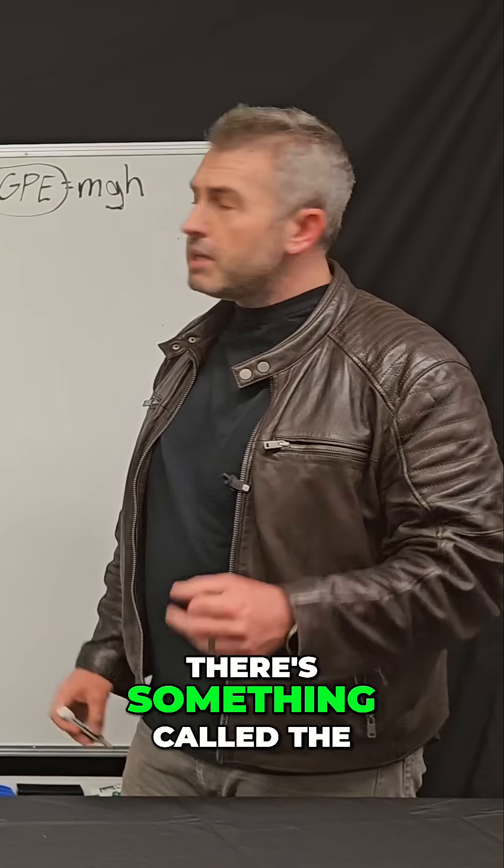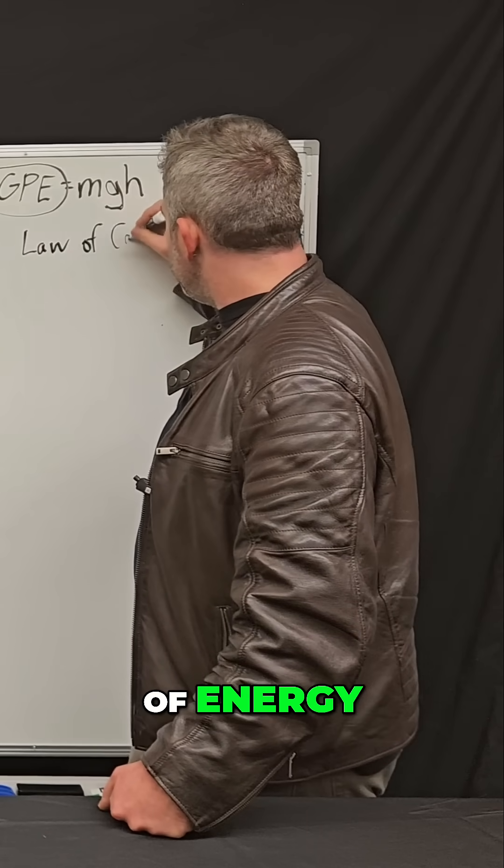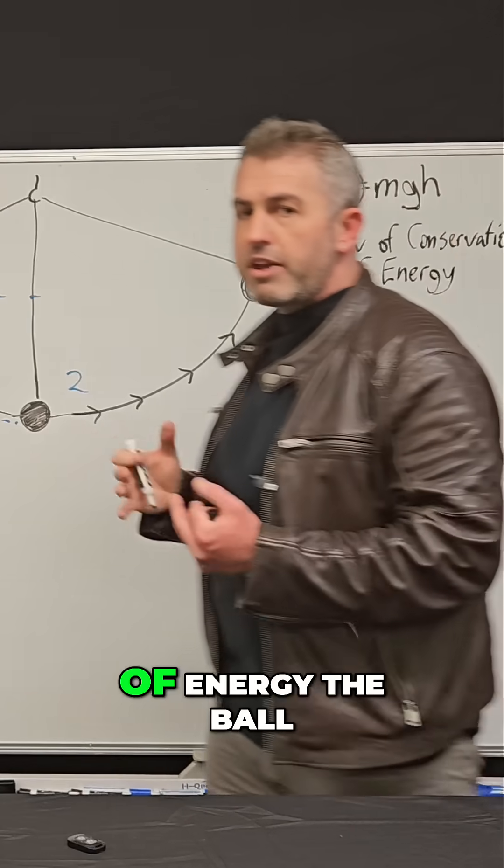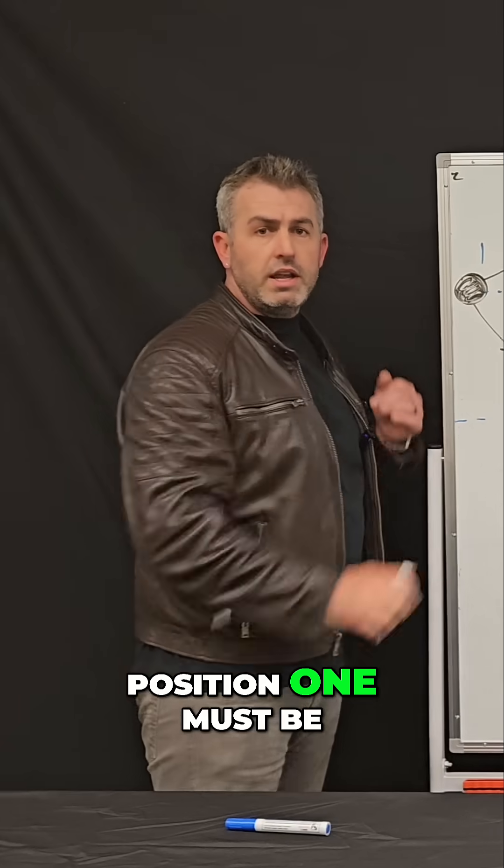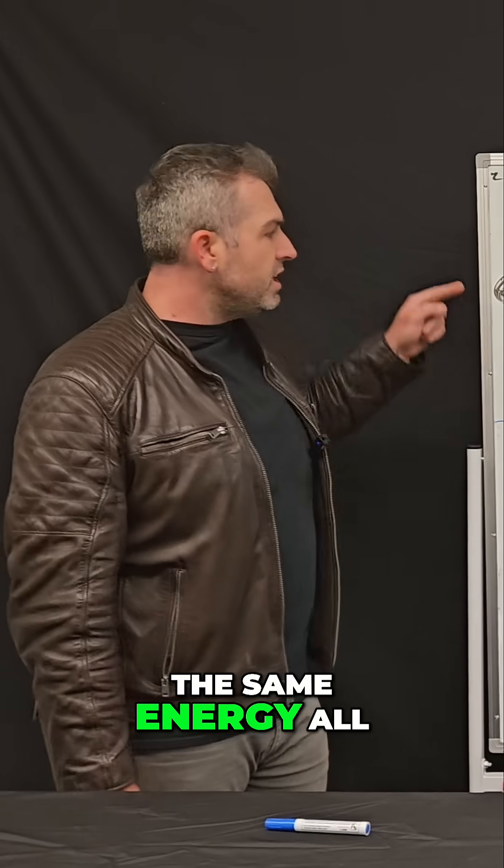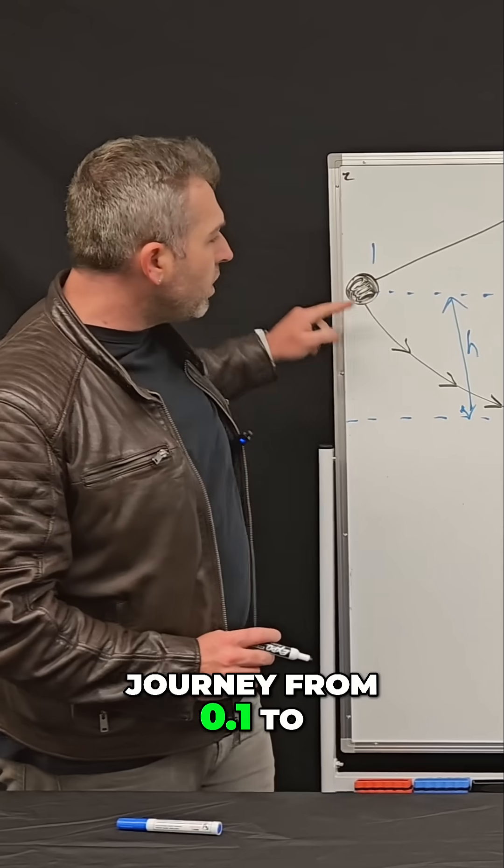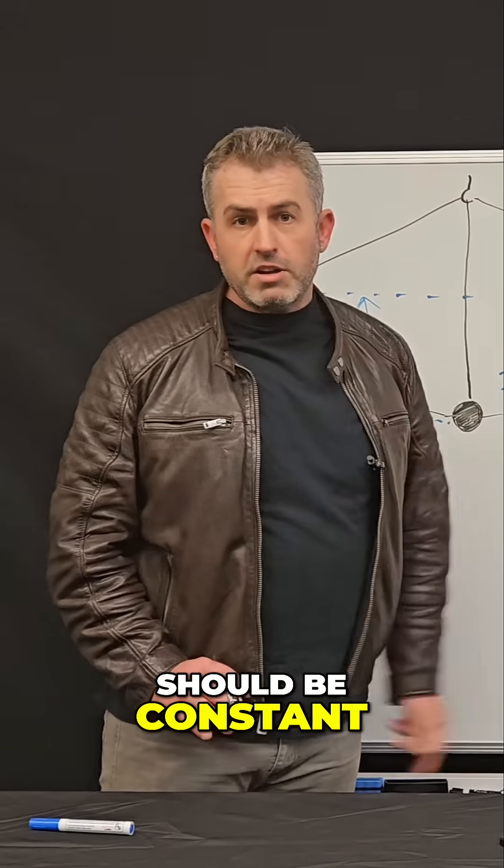So we know how much energy the bowling ball had at the very beginning. And it turns out there's something called the law of conservation of energy. And this law tells us that whatever amount of energy the ball had while it was being held here at position one must be the same energy all throughout this system. So on its entire journey from point one to the other side and back again, that amount of energy should be constant.